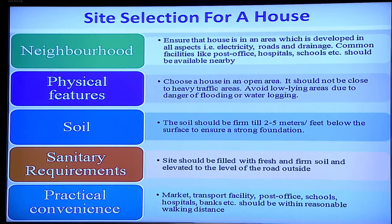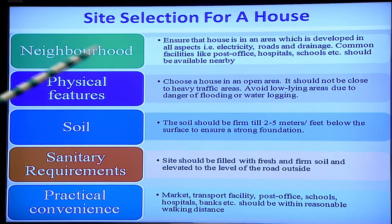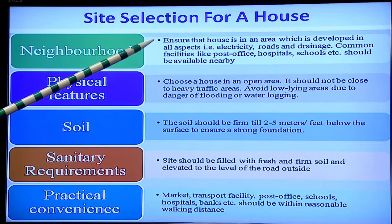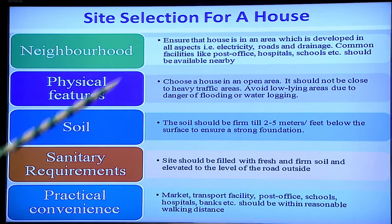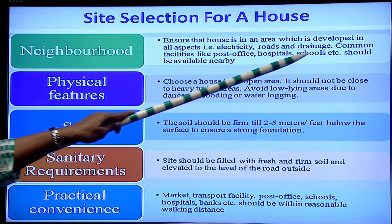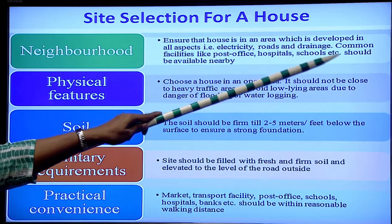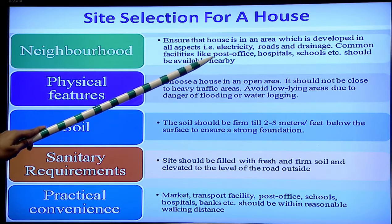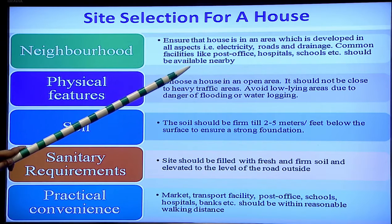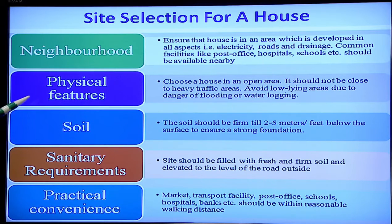Moving to the next objective: what are the various factors considered for the selection of a site? The first factor is neighborhood. When selecting a site, we must be careful that it is in a developed area with full facilities — electricity, developed roads, and proper drainage. Common facilities such as post offices, hospitals, and schools should also be available nearby.